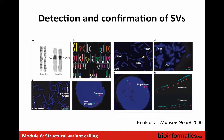It's been known for many years that these types of structural variants occur. As soon as you had technologies that could look at chromosomes, you could detect things like translocations using FISH technology. But all of these are low-resolution methods. Now that we have all of this detailed sequencing data, we should be able to extract very high-resolution information about these changes — exactly where on the chromosome a translocation occurs.